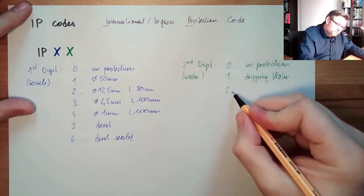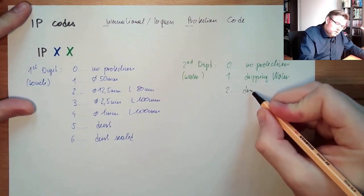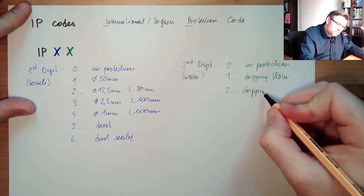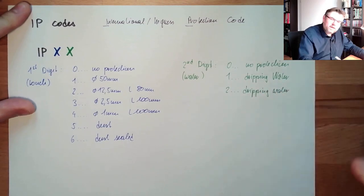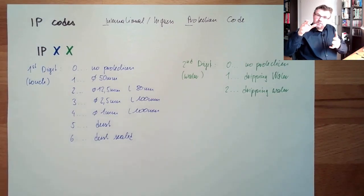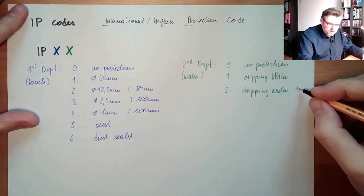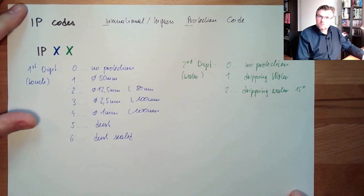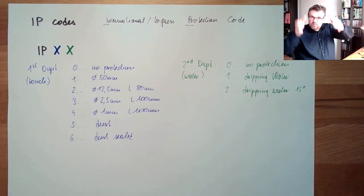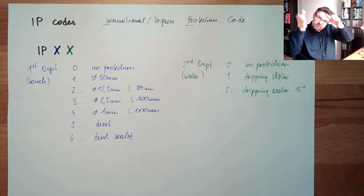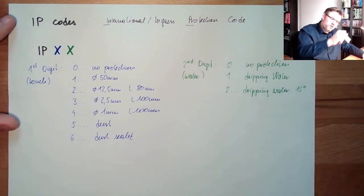Two, also dripping water. However, at the tilt angle of the case, or whatever, 15 degree tilt. So even if it's tilted, or the water is not dripping straight, but with 15 degrees, dripping water protected. IPX2.